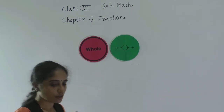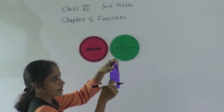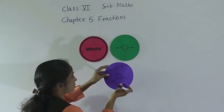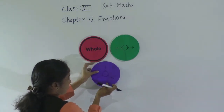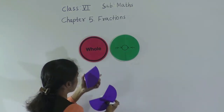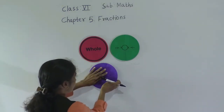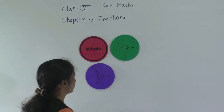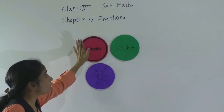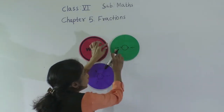Now, one third part. Each part — see, these parts are one third parts. One third part: one, two, three. This is the whole divided into three equal parts, so we got one third part. One upon two — one upon two — half parts are there.